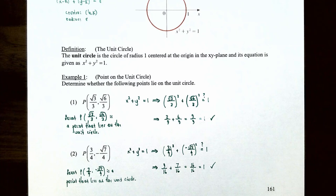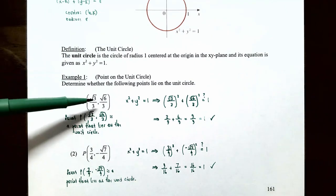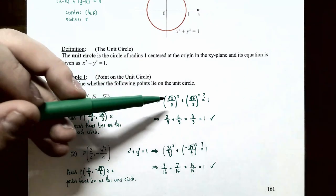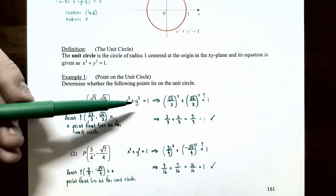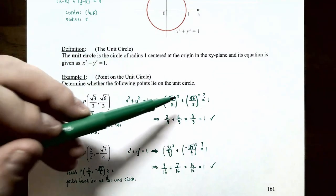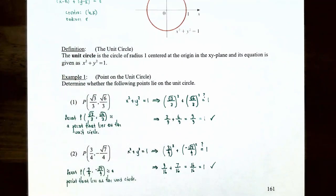In Example 1, we determine whether points lie on the unit circle by checking if they satisfy x² + y² = 1. For the point (√3/3, √6/3): (√3/3)² + (√6/3)² = 3/9 + 6/9 = 9/9 = 1. So this point is on the unit circle.